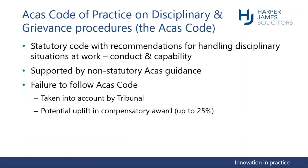The ACAS Code of Practice on disciplinary and grievance procedures - better known as the ACAS Code - has gone through various versions since 2000 and we're currently on the 2015 version. The Code recommends how we handle disciplinary situations at work, covering conduct and capability, and in this case we're looking at performance as part of that capability issue. The Code is supported by non-statutory ACAS guidance - a very useful document with lots of practical tips based on good industrial relations practices and years of unfair dismissal cases. We thoroughly recommend using that to support you in any management of underperformance issues.